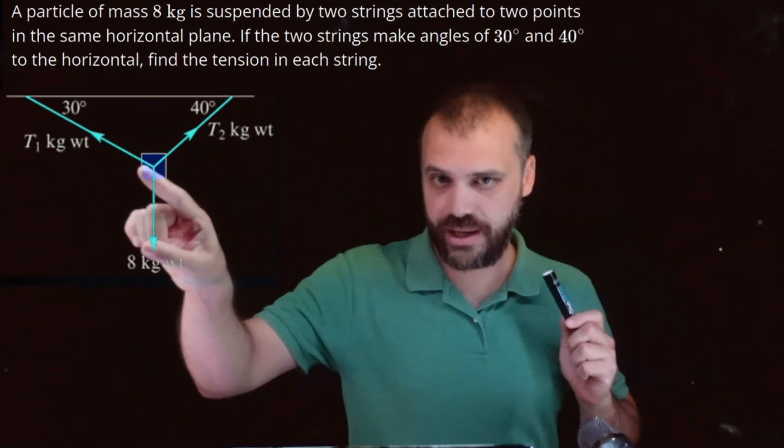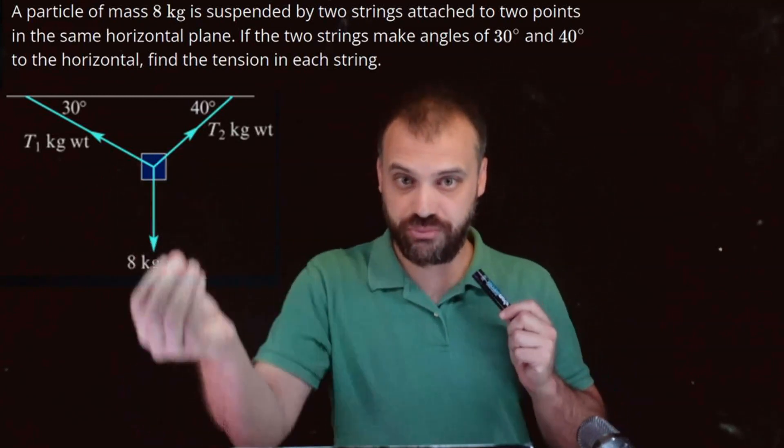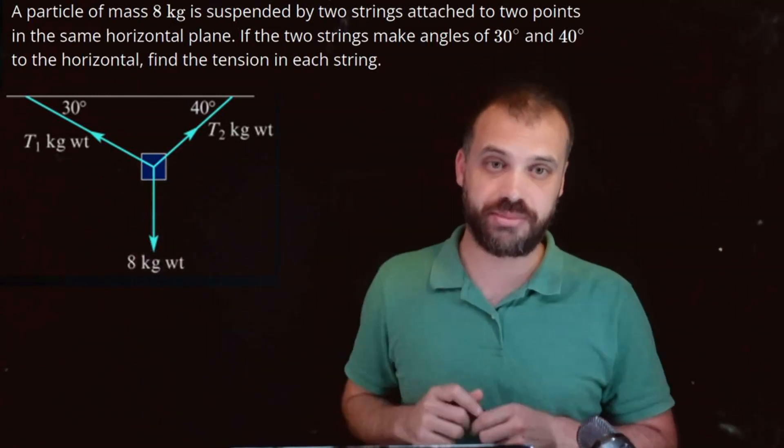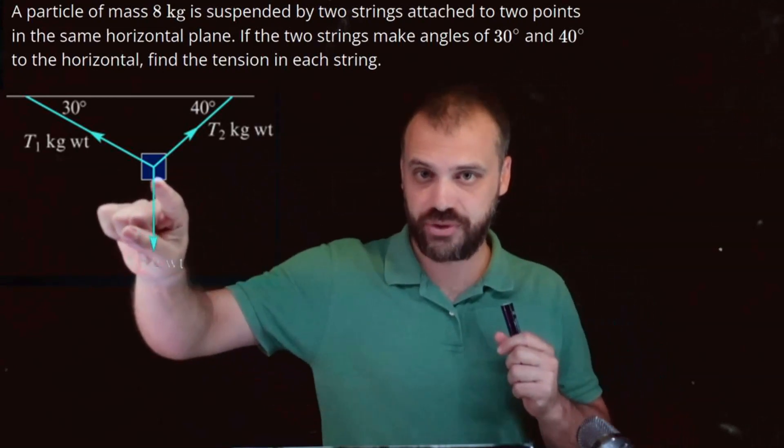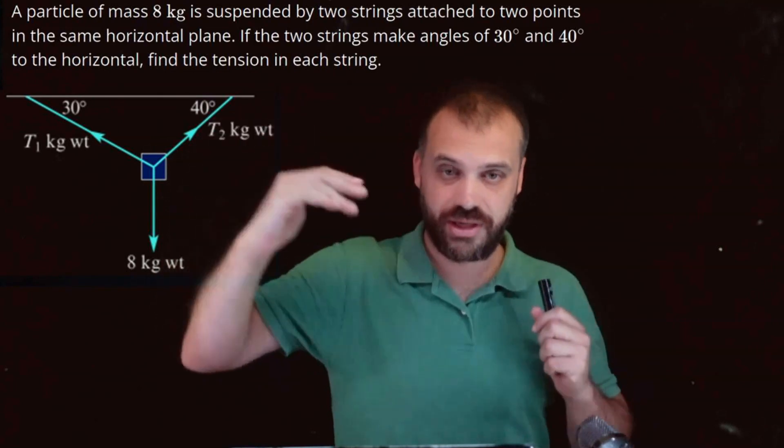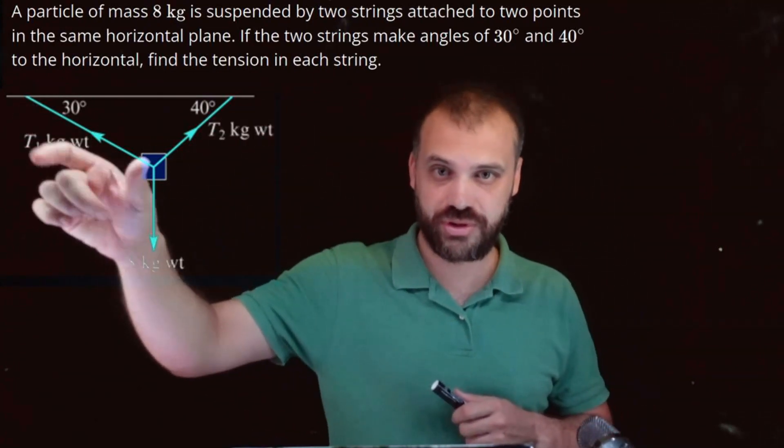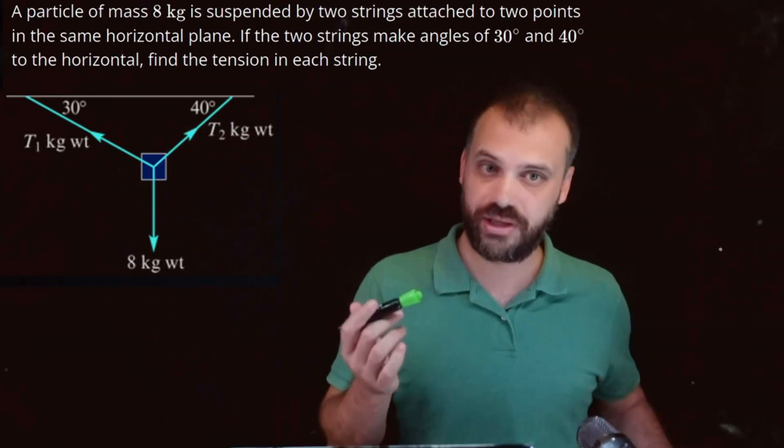So we have a particle of mass 8 kilograms. Now that force is moving directly downwards, 8 kilograms weight. And then we have two strings that are 30 degrees and 40 degrees to the horizontal. And we don't know the tensions in those strings or those strings right there.